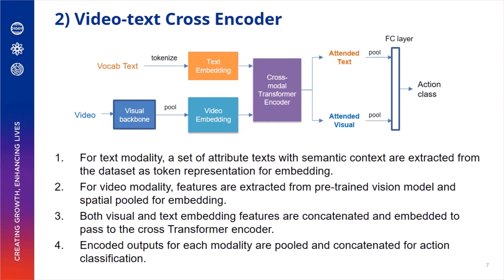Our second architecture for the Video Text Cross-Encoder is shown here. For text modality, a set of attribute texts with semantic context are extracted from the dataset as token representations for embedding. For video modality, features are extracted from a pre-trained vision model and spatially pooled for embedding. Both visual and text embedding features are concatenated and embedded to pass to the cross-transformer encoder. The encoded outputs for each modality are then pooled and concatenated for action classification.